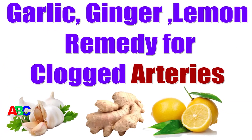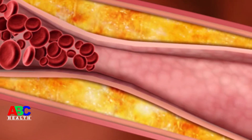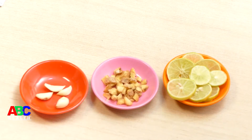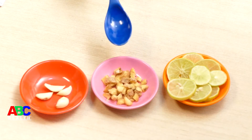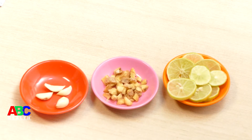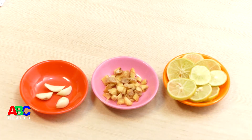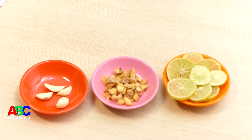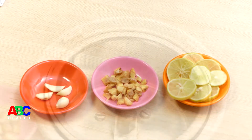Here is an amazing drink using garlic, ginger, and lemon to help with blocked arteries. We need lemon, ginger, garlic, and some water. Numerous benefits come from the combination of these three super healthy foods, and this drink can have many positive effects on your body.